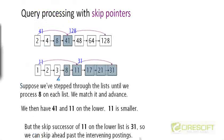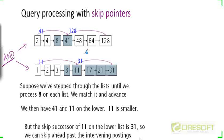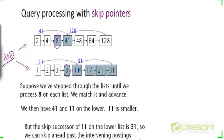Let's take a detailed example. Suppose we want to take the intersection of two lists — an AND query — and look at a snapshot of the merge process when both pointers are on element 8. Both pointers will be incremented, 8 will get appended to the answer list, and the first pointer will point to 41 while the second pointer will point to 11.